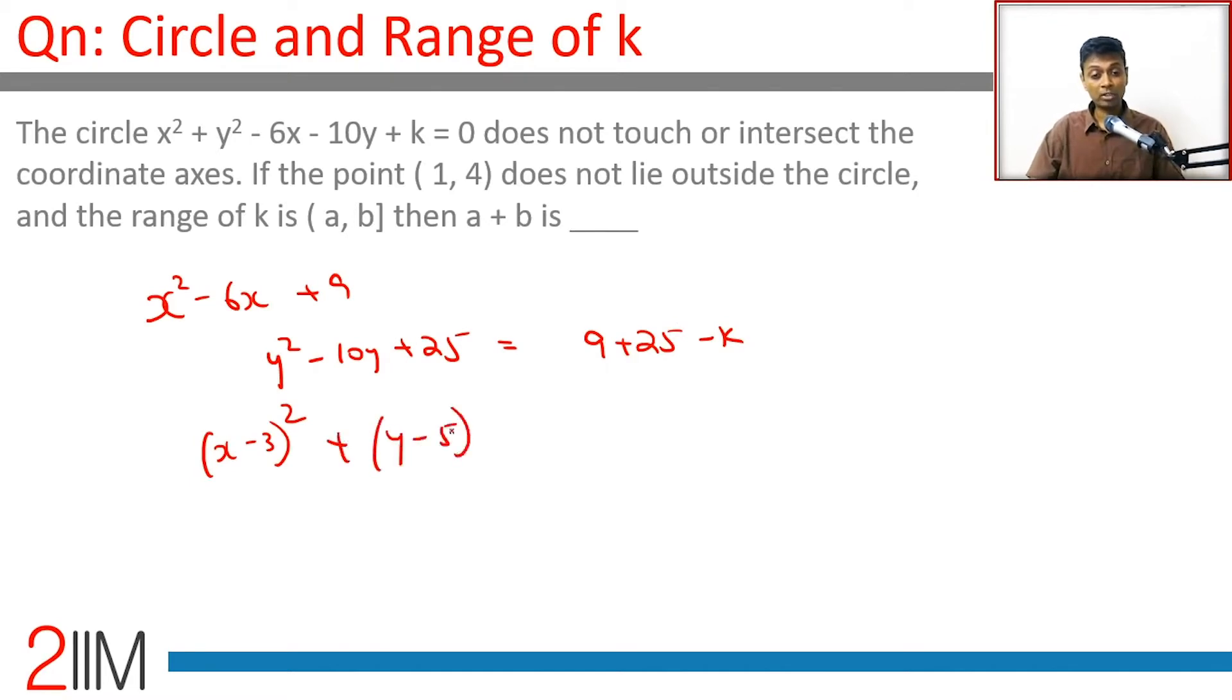Equals 34 - k. The center of the circle is going to be (3, 5) and the radius is going to be √(34 - k). Brilliant. So let's locate this (3, 5), the center of the circle.